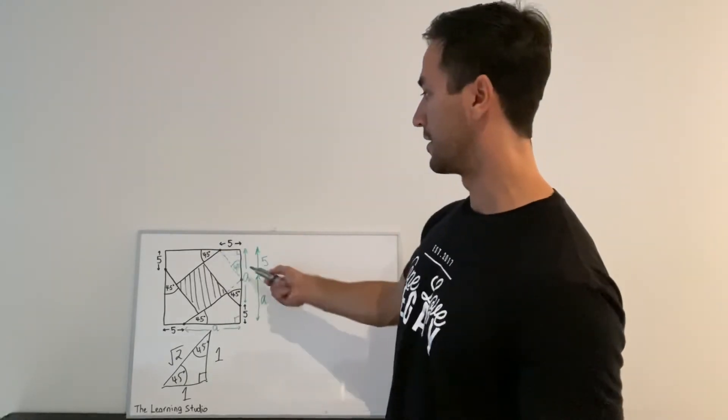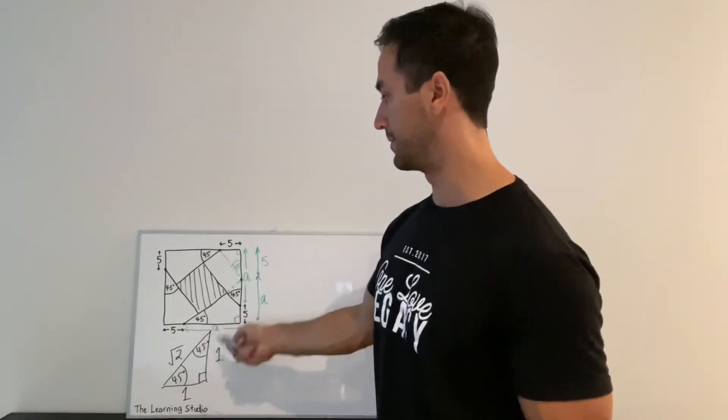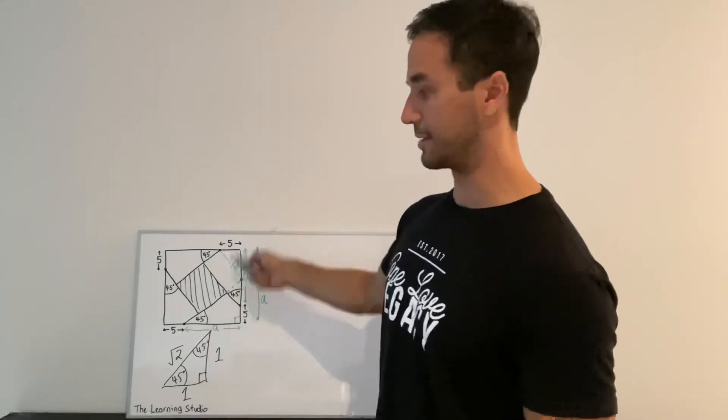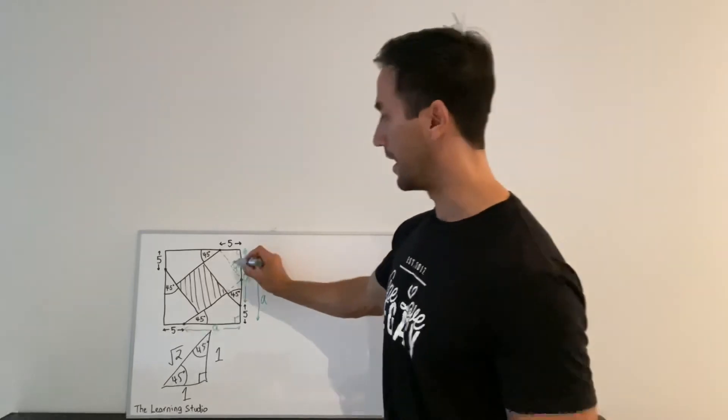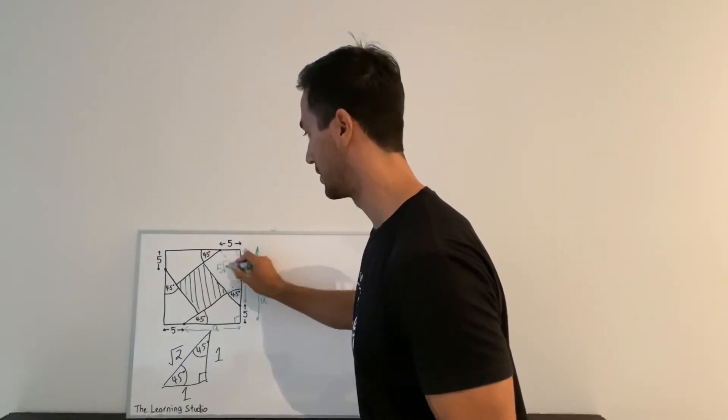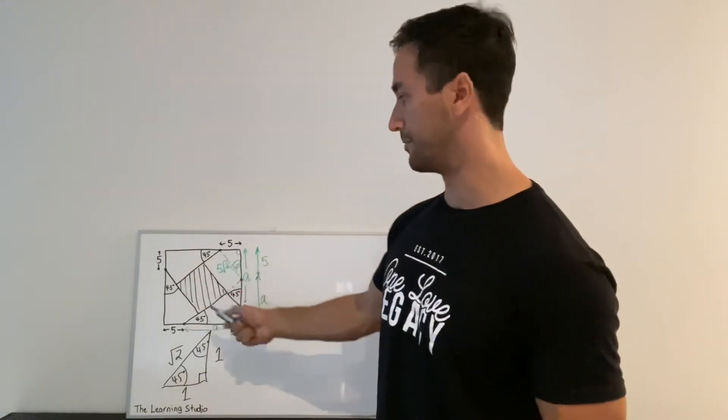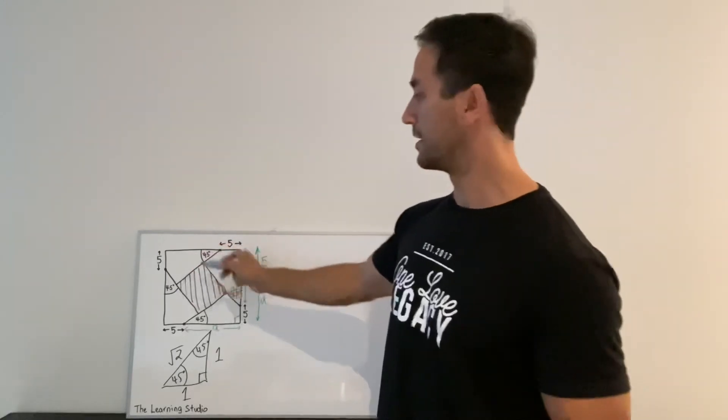And so now it's clear using Pythagoras or knowing that this triangle has to be similar to this one, this length here has to be five times the square root of two. And we can play the same game on one of these other edges.